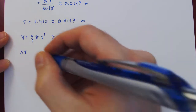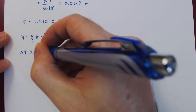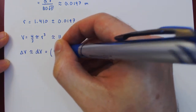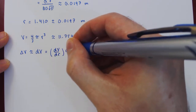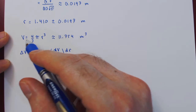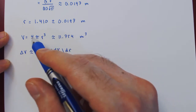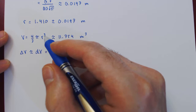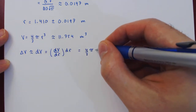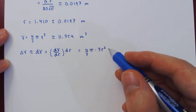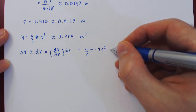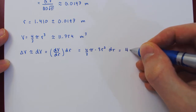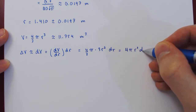The uncertainty of the volume is a small change in the volume, approximated by the differential dV. Since V is a function of r, dV equals the derivative of V with respect to r, times dr. The constant 4/3 π stays, and the derivative of r cubed by the power rule is 3r squared. The 3s cancel, leaving dV = 4πr² dr.